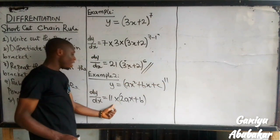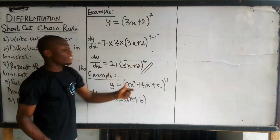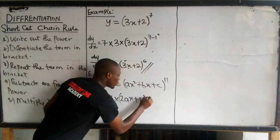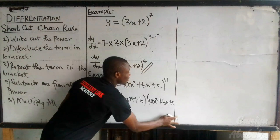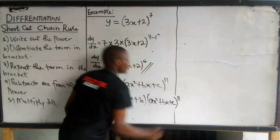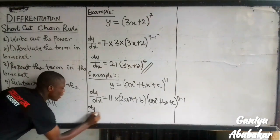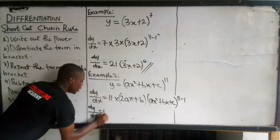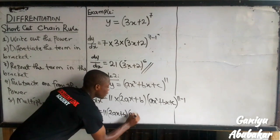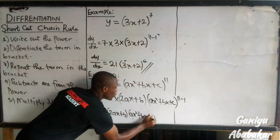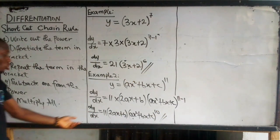After writing out the power and differentiating the term in brackets, the next step is to repeat the term in brackets. I'll have multiplied by (ax² + bx + c), all to the power 11 minus 1. So at the end, dy/dx equals 11 times (2ax + b) times (ax² + bx + c) to the power 10. That is the answer using chain rule shortcut.